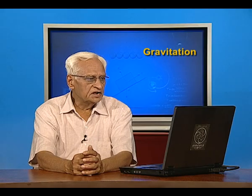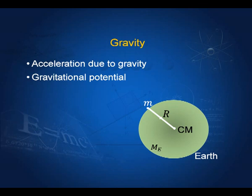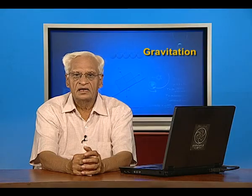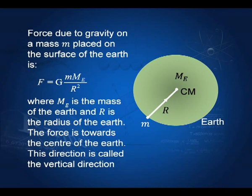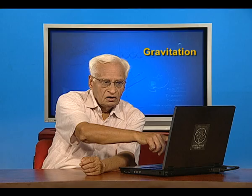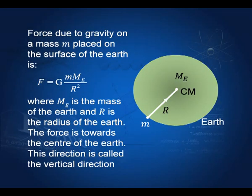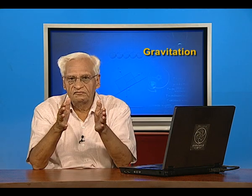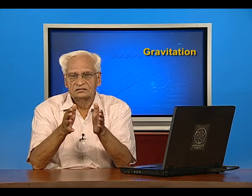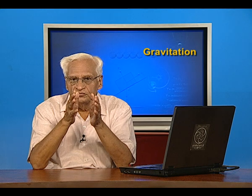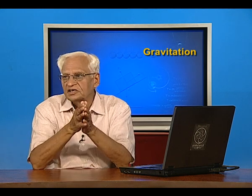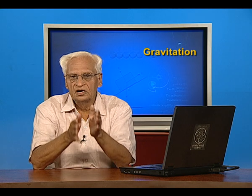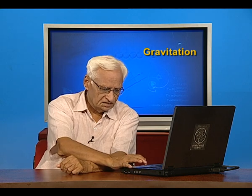The force due to gravity on a mass m placed on the surface of the earth is equal to G times m into the mass of the earth divided by the square of the radius of the earth. The direction in which this force acts, towards the center of the earth, is called the vertical direction. This is important to remember: wherever you are, vertical direction is the direction towards the center of the earth.